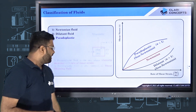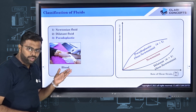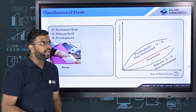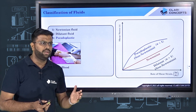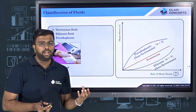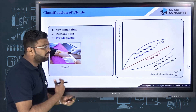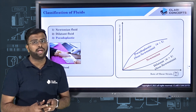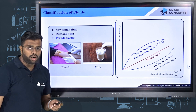A surprising example of a pseudo plastic fluid is human blood. Doctors always recommend that the flow in veins should not be reduced below a certain value; otherwise blood increases its viscosity significantly, which can cause blockage within the veins. Another example is milk.